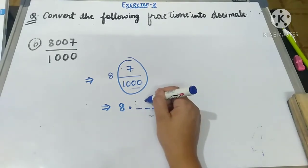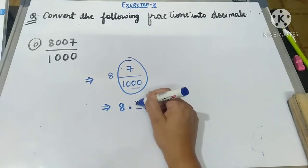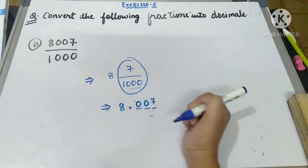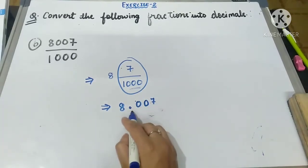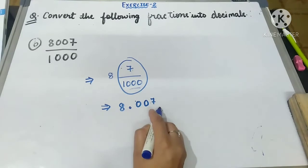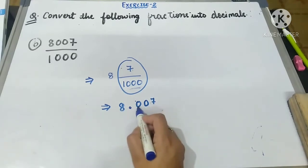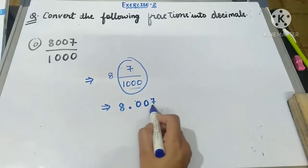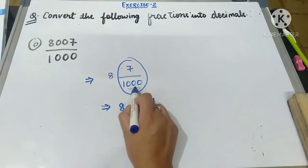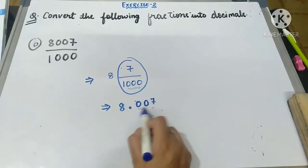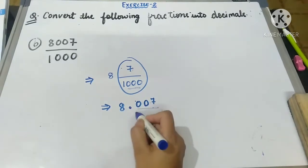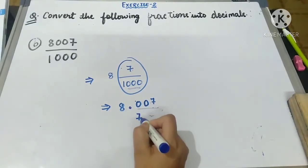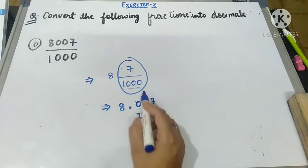We place 7 at the thousandths place, and fill the remaining blank decimal places with zeros. So the decimal form is 8.007. There are three decimal places and three zeros in the denominator — you just have to make sure you fill the blanks before the digit with zeros as needed.